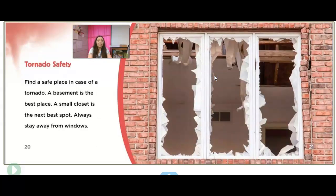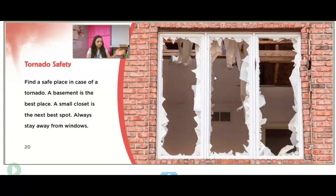Tornado safety is very important. Find a safe place in case of a tornado — a basement is the best place, going underground. A small closet is the next best spot. In Oklahoma, you might have an actual storm shelter that goes in your garage, or some people have them built into a closet. Always stay away from windows, because when the wind hits them, that glass is going to fly and it could injure you.